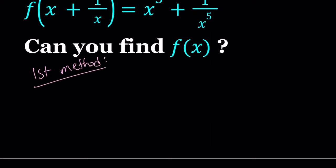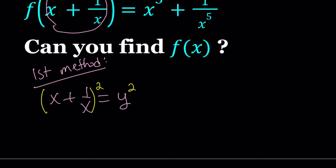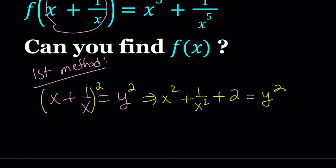For my first method I'm going to set x plus 1 over x equal to y. From here we're going to square both sides. That's going to give us x squared plus 1 over x squared plus 2 times x times 1 over x, which is just 2, and this is equal to y squared. So from here I can isolate x squared plus 1 over x squared as y squared minus 2.